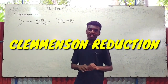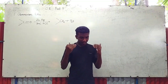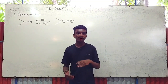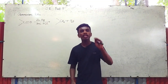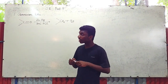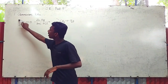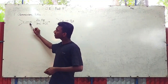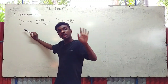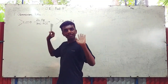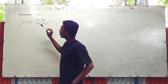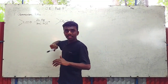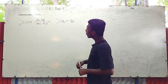Reaction No. 1: Clemmensen Reduction. In Clemmensen Reduction, when we have a carbonyl group (C=O), we treat it with zinc amalgam and concentrated HCl. This is the reagent used in this reduction.